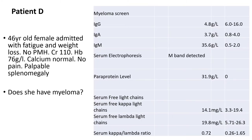Let's move on to patient D. We have a 46 year old female admitted with fatigue and weight loss. She's otherwise fit and well. Creatinine is a little bit high. HB is very low at 76. Calcium is normal, no pain, but she does have a palpable spleen on examination. She's got no lymph nodes palpable in her neck, armpits, or groin. Have a look at the myeloma screen — does she have myeloma?